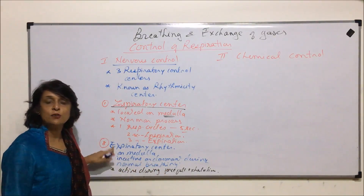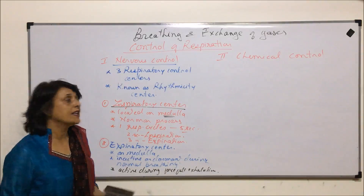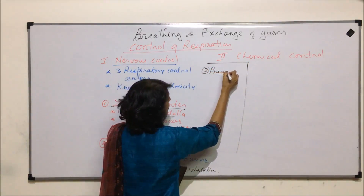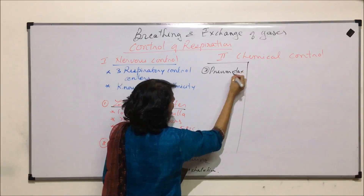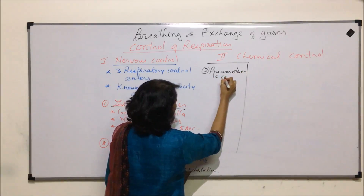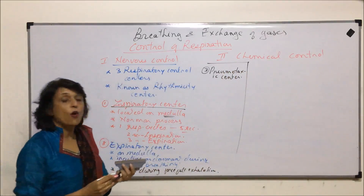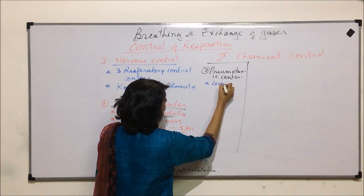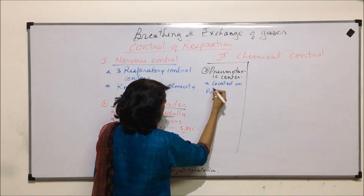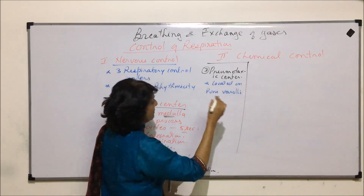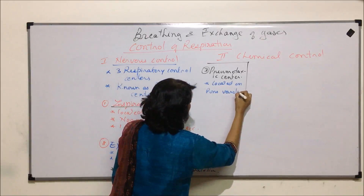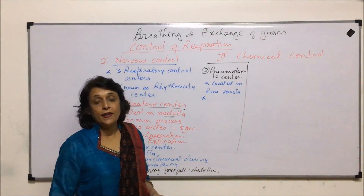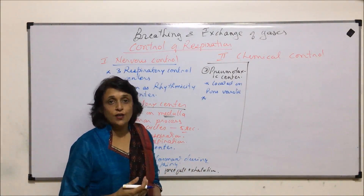Then there is a third center, which is known as the pneumotaxic center. This is located on the pons — so the location is now different. Instead of the medulla, it is located on the pons, which is also a part of the brain. It works during exercise when the breathing rate has to be faster.